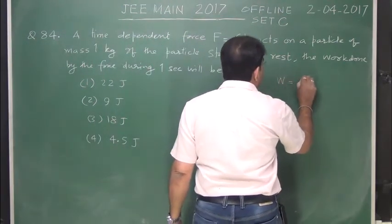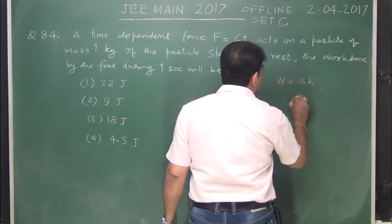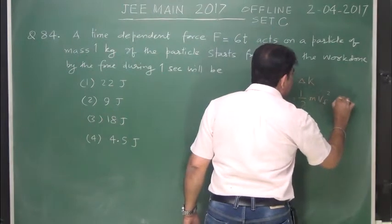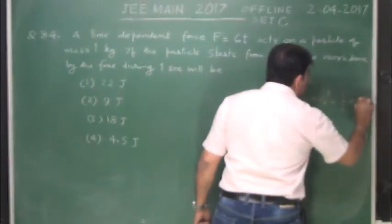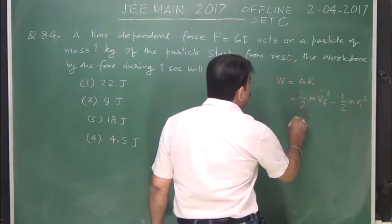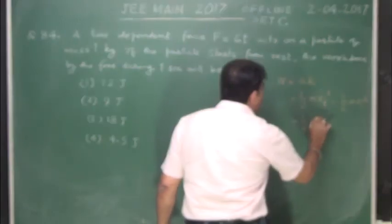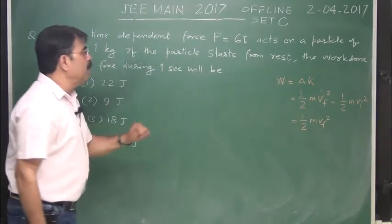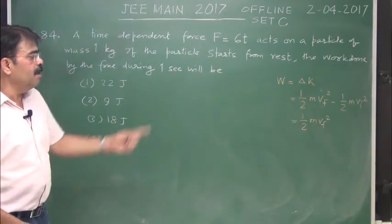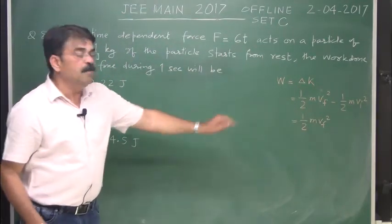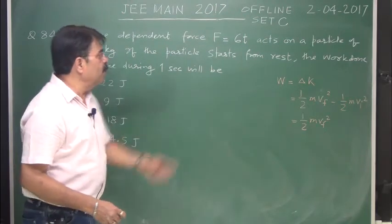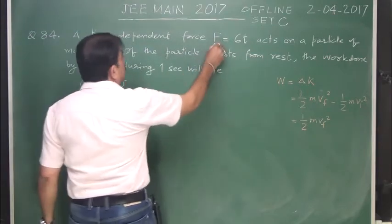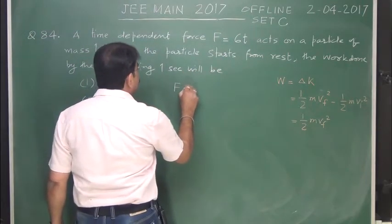Work done is equals to change in kinetic energy, half m final velocity square minus half m initial velocity square. And initially, the rest means initial velocity is zero. One second after, we need to find the velocity.